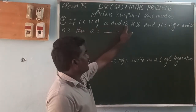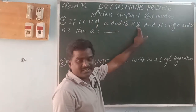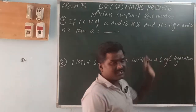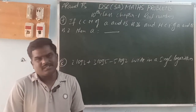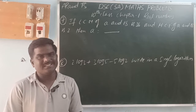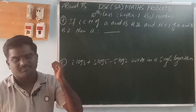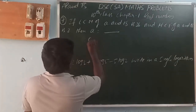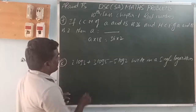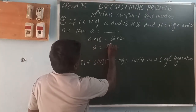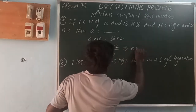Next: LCM of A and 18. The product of two numbers equals the product of their HCF and LCM. So A times 18 equals LCM times HCF. Here 18 equals 36 times 2 divided by 18, giving 18 equals 8 times 2. So A equals 4.